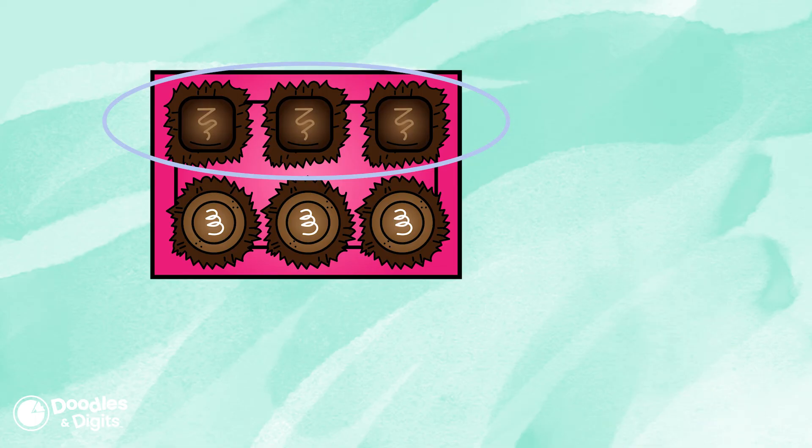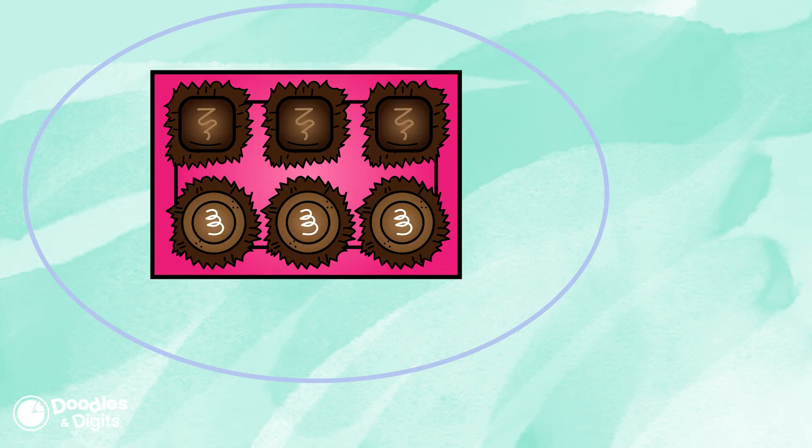Three of these chocolates in this chocolate box are squares. There's six chocolates in the box total. So, our fraction is three sixths.